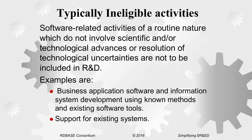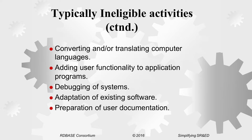Typically ineligible activities include things related to business application software, supporting existing systems, and things that don't involve technological uncertainty. Translation or conversion of programs from one form to another is ineligible. Adding user functions is a classic one CRA has a problem with — a lot of people say their advancement was adding new features and functions, but that in itself may not create technological uncertainty; it may be a business advancement, not a technological one. You want to talk about doing things faster, using less RAM, using memory cache to improve response — some kind of measurable performance improvement. Debugging, adaptation, and preparing user documentation are also ineligible.